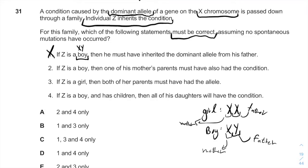If Z is a boy, then one of his mother's parents must have also had the condition — which is correct. For the IMAT, you should know that a dominant allele will be present as a phenotype in every generation, and it won't skip a generation.